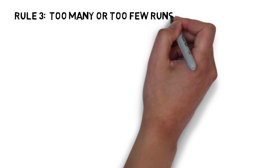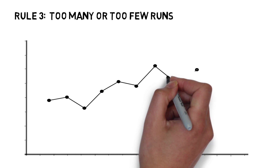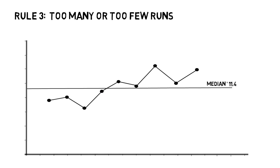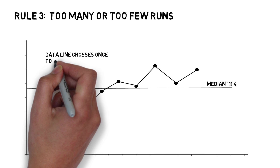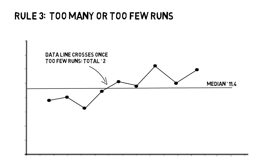Rule 3 is the rule of too many or too few runs. A run is a series of points that are in a row on one side of the median. Any point that lies right on the median is ignored when counting a run. A special table is required to assess whether there are too few or too many runs. If the number of runs is more or less than the limits provided in the table, then a signal is evident.